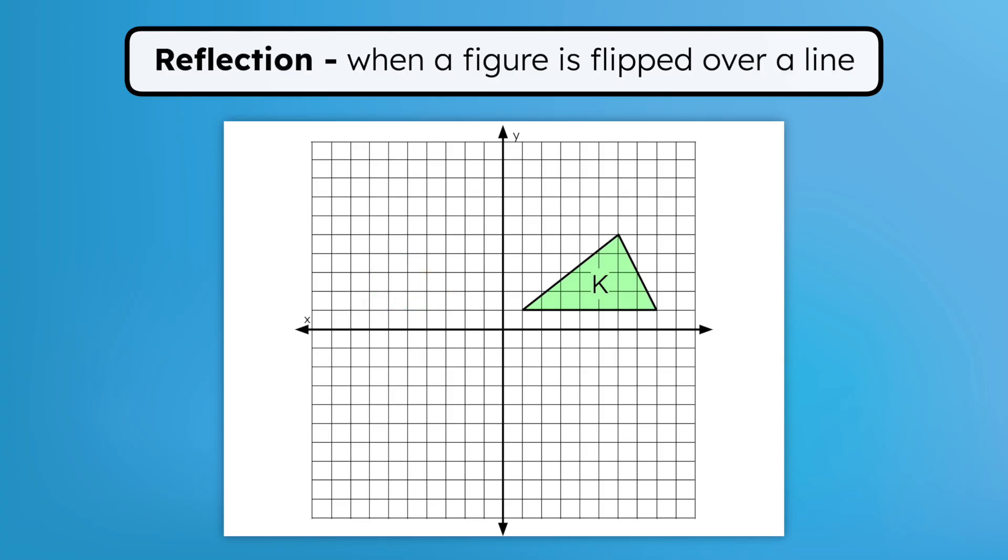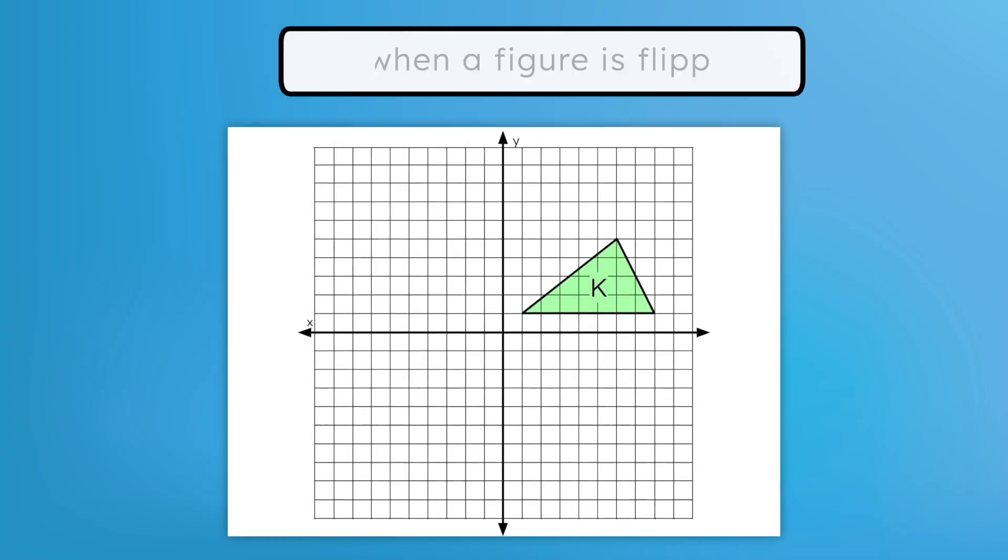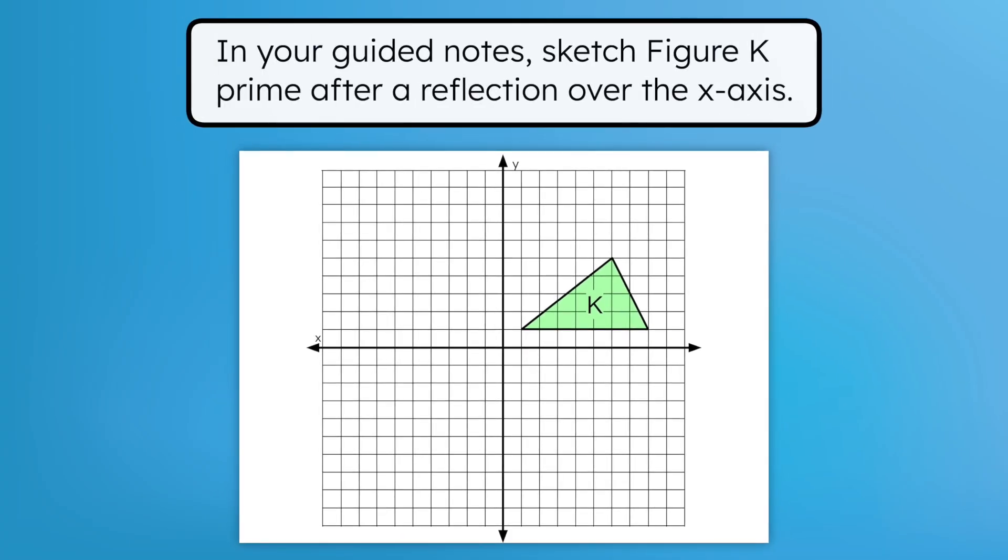But let's say we wanted to reflect figure K over the X axis instead. In your guided notes, go ahead and sketch what you think figure K prime would look like. The X axis is now the mirror. It's the line that the pre-image will be flipped over. Reflecting figure K over the X axis would create a figure K prime that looks like this.